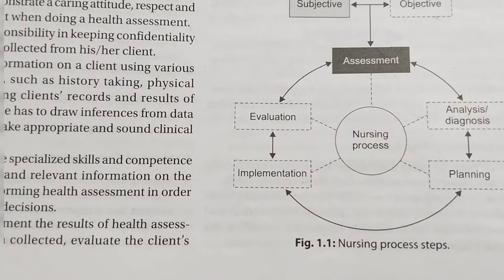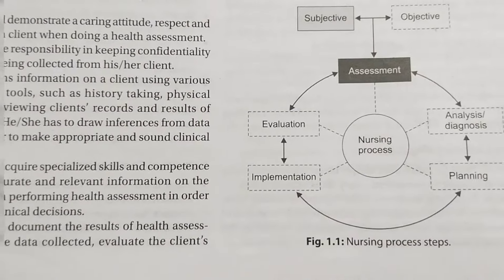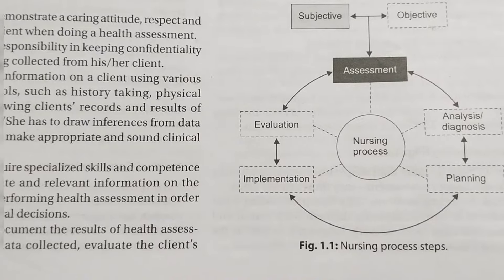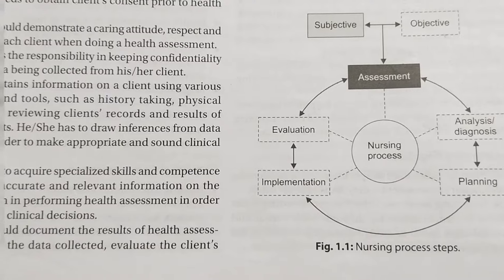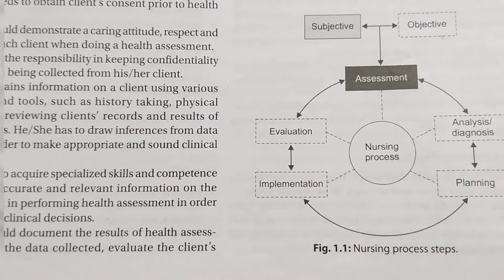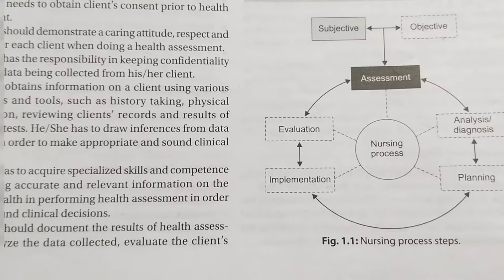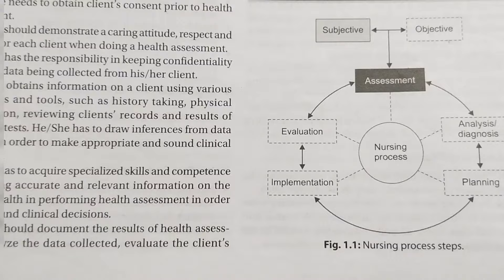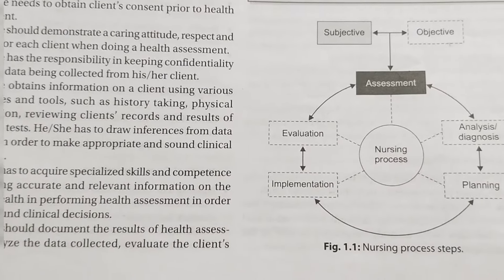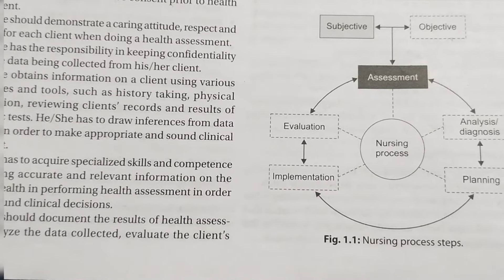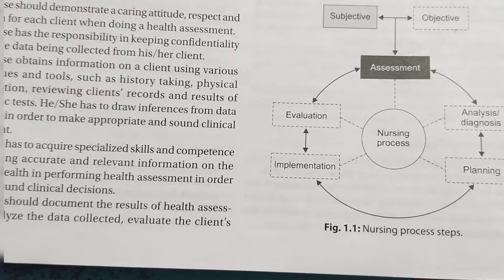In the nursing process there are some steps. The first step is assessment; after assessment you have diagnosis; after diagnosis, planning; after planning, implementation; after implementation, evaluation. In assessment, you have two types of data: one is subjective data and one is objective data. We will discuss this in detail in unit 2 on nursing diagnosis.